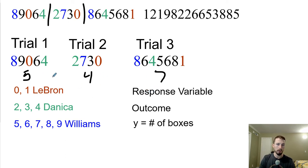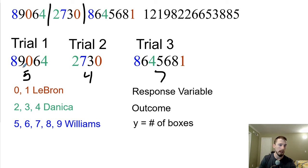Our response variable is what we're interested in — those trial lengths. The outcome is the outcome of each component. There are two outcomes you can talk about: the outcome of a component and the outcome of a trial. Our y-values are the number of boxes, which is another way of saying the response variable.